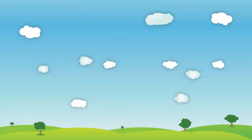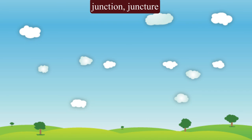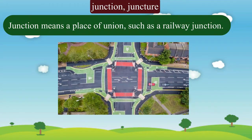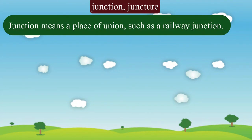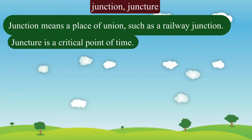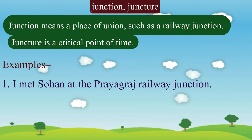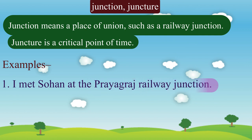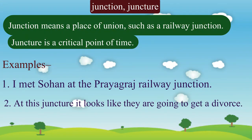Let us look at junction and juncture. Junction means a place of union, such as a railway junction, whereas juncture is a critical point of time. Please repeat after me: I met Suhan at the Prayagraj railway junction. At this juncture, it looks like they are going to get a divorce.